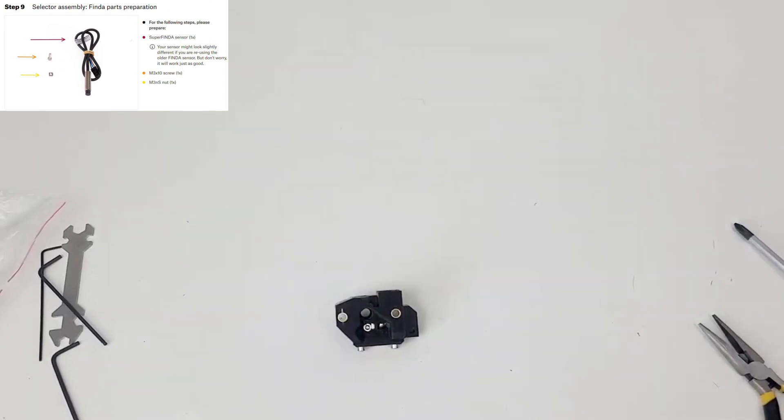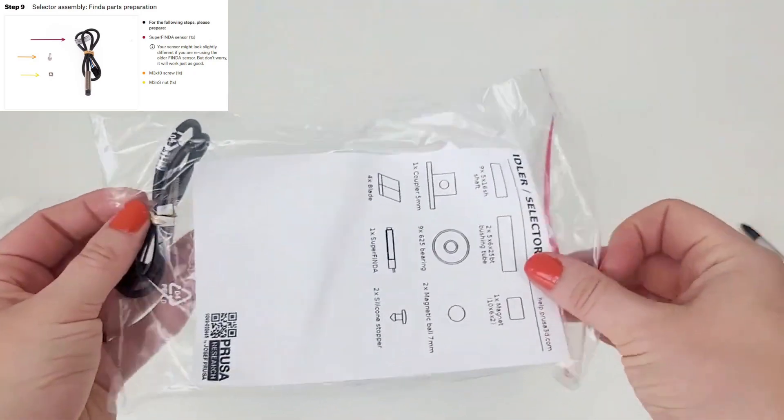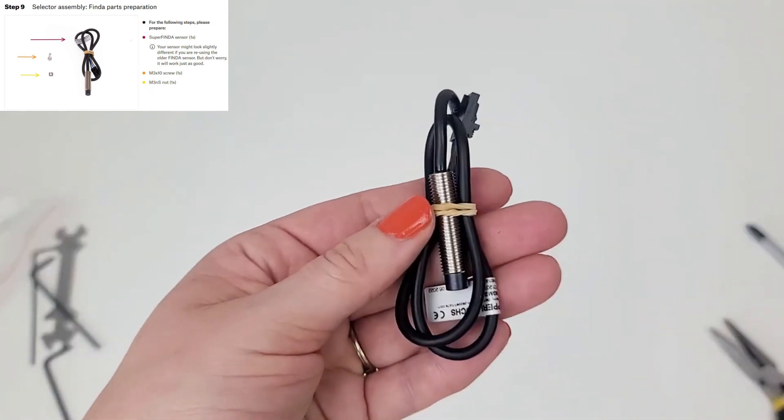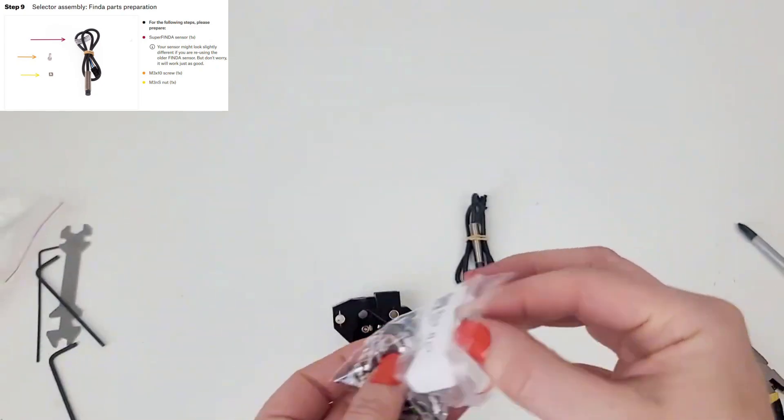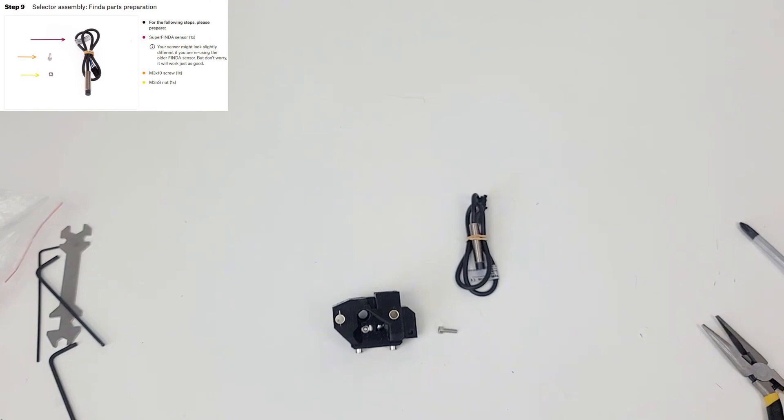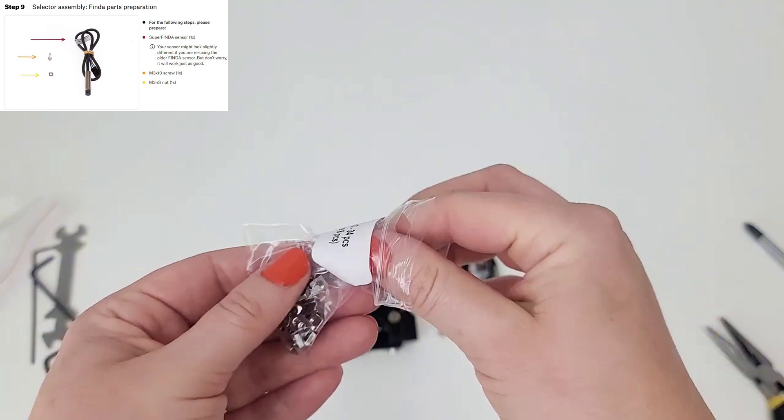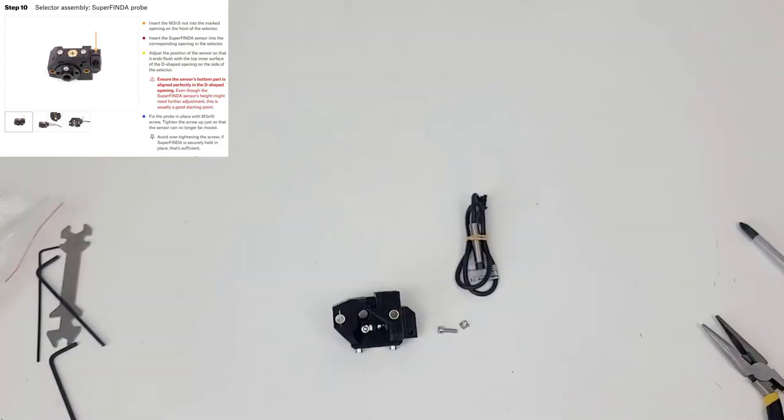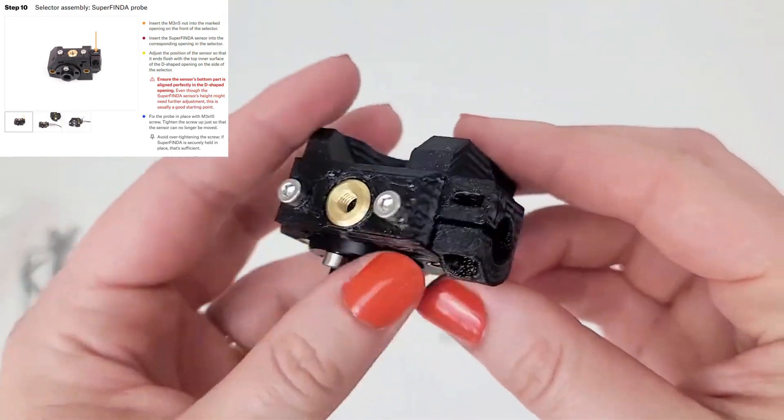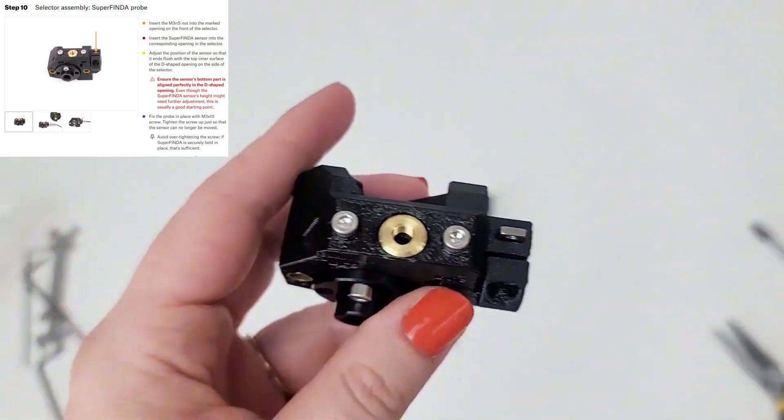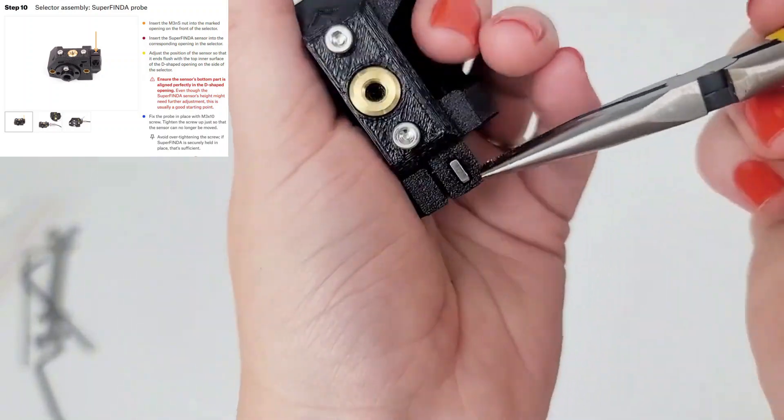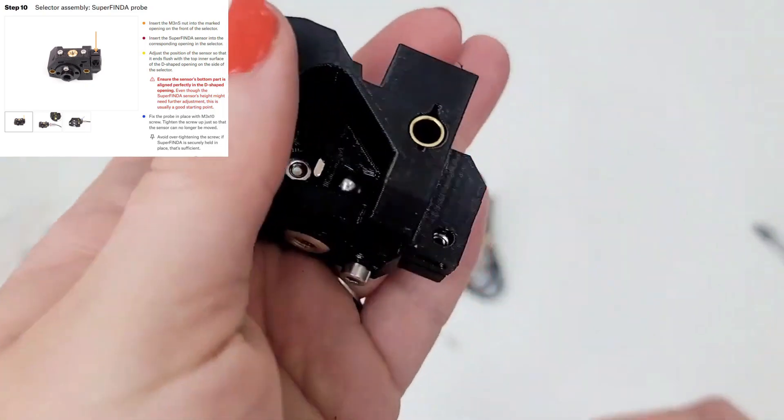Now we want the Super Finda, which for me is the last thing in this bag. M3 by 10 screw and an M3NS square nut. Step 10: Insert the M3NS nut into the marked opening on the front of the selector.